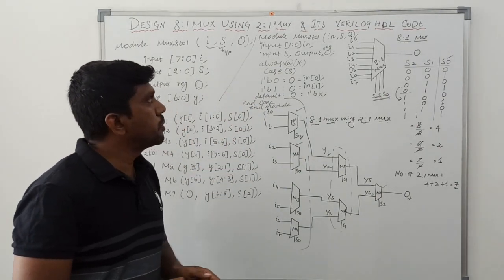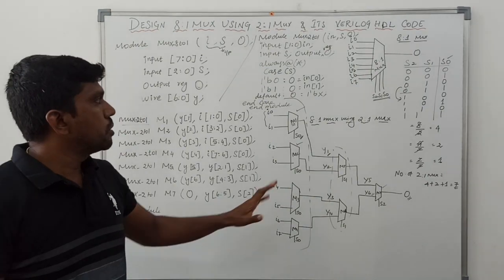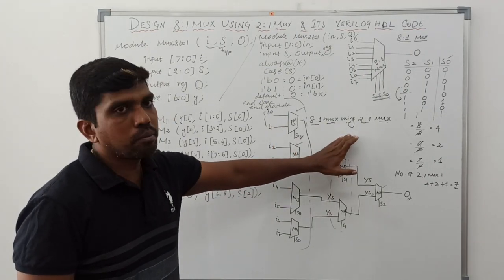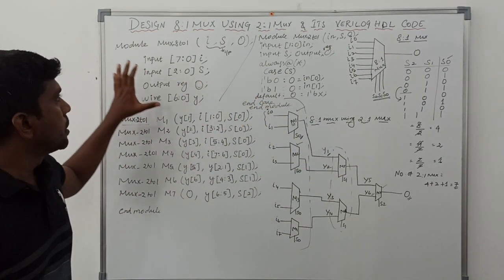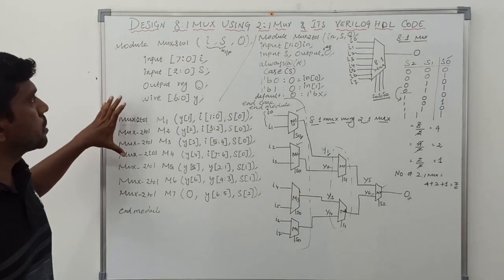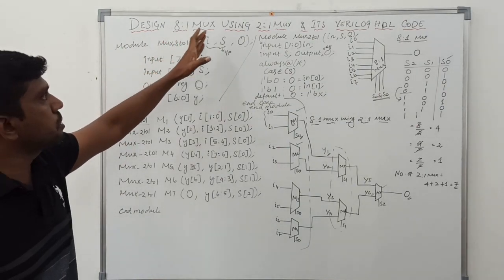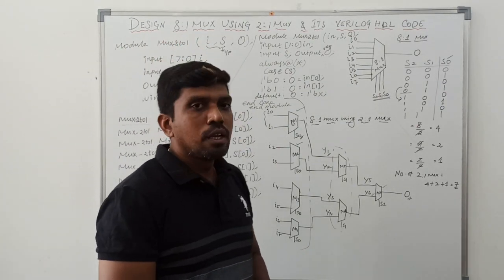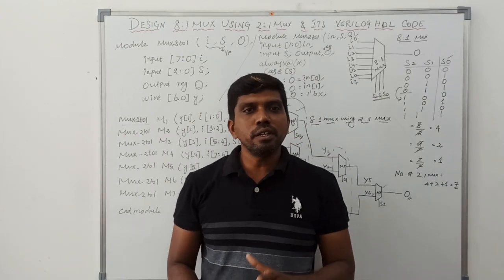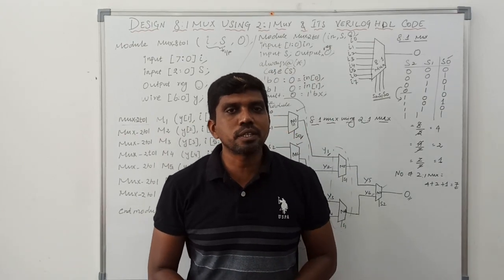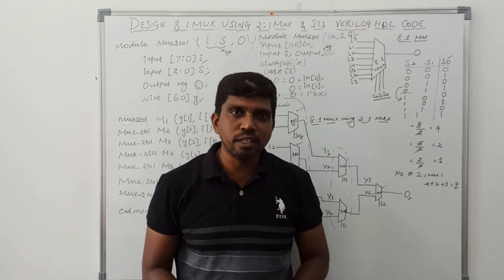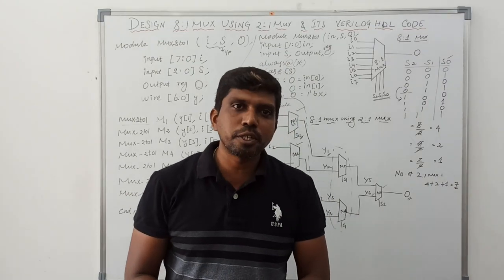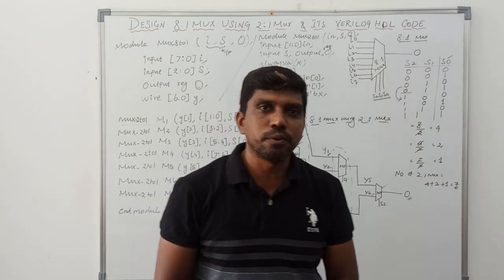This is the simple way to design the 8-to-1 multiplexer using 2-to-1 multiplexers, and this is the procedure to write the Verilog code. I hope you understand the concept very well. If you are watching for the first time, kindly subscribe and support us to make more videos. Thanks for watching my channel. Thank you.